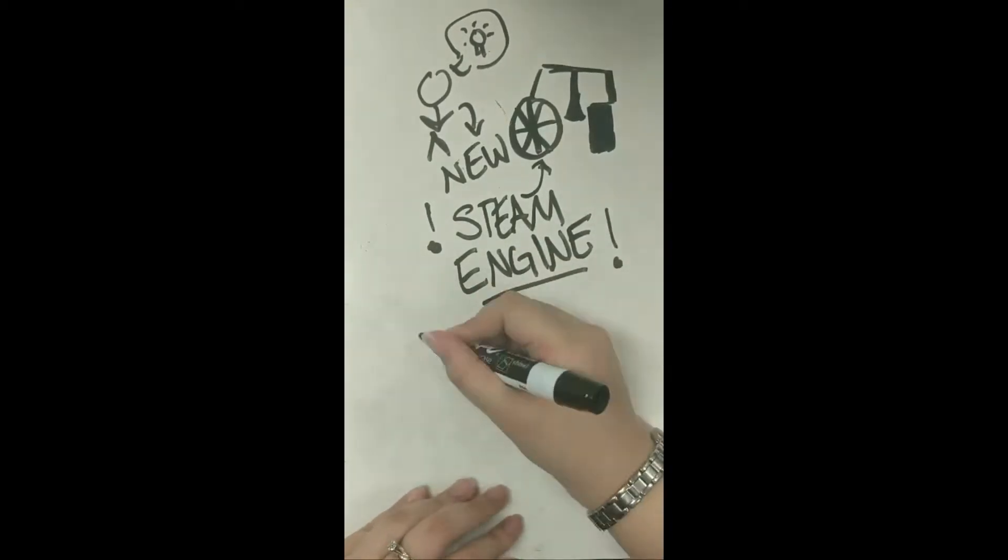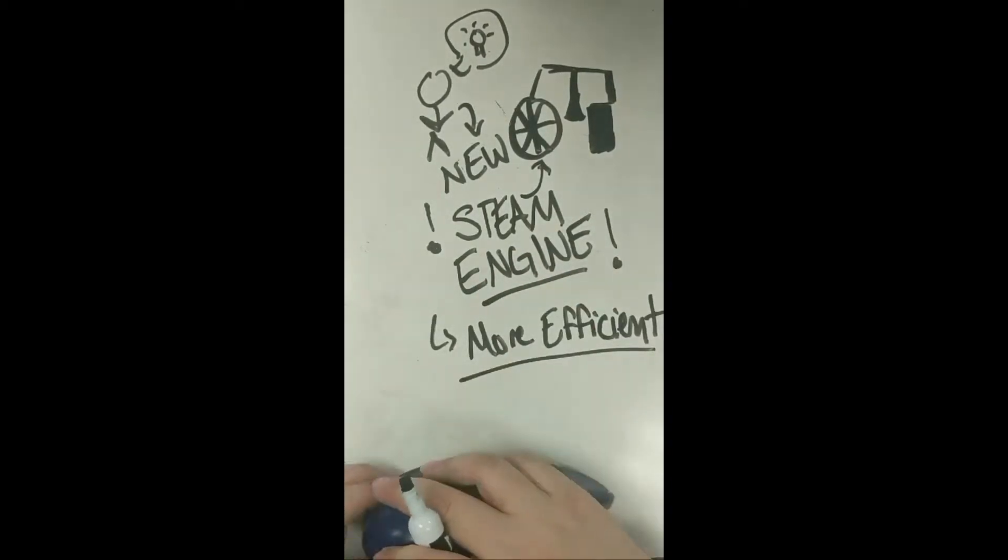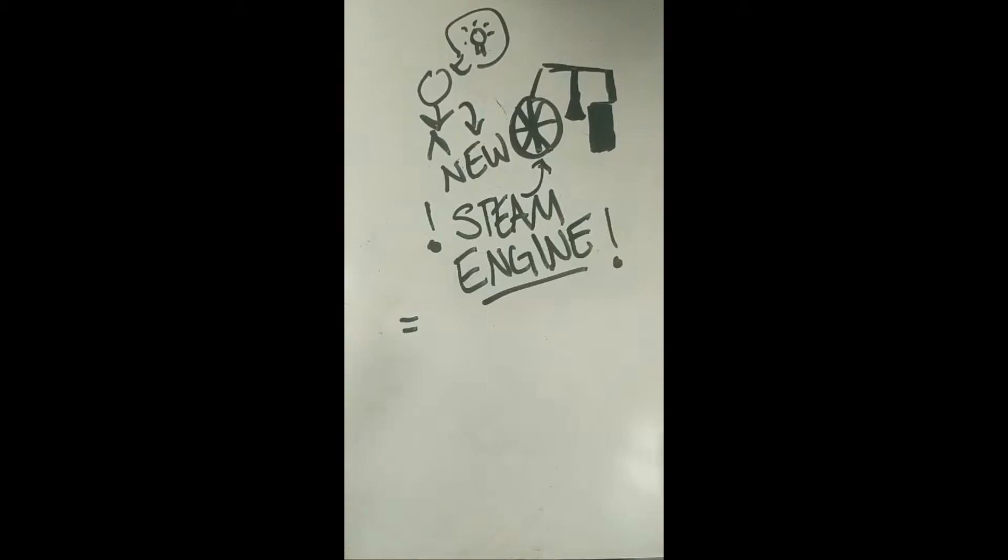In 1763, Watt reduced the wasted energy of Newcomen steam engines and later commercialized their use in Britain.